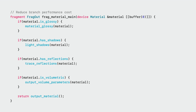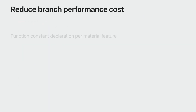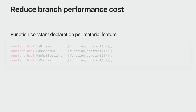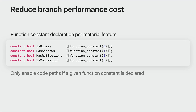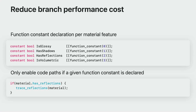An uber shader would query material parameters from a buffer, doing conditional branches at runtime to enable and disable features. With function constants, you declare one constant per material feature. The dynamic branch for the feature code path is replaced with the function constant, eliminating all unused code.